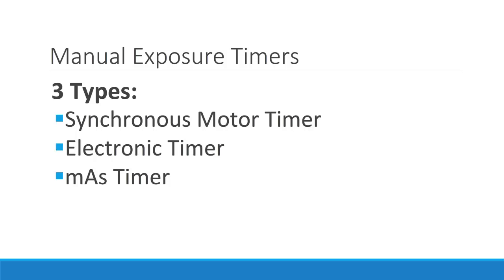All three are utilized during manually set technique exposures and do not include automatic exposure control, which we will discuss in a separate video. The three types are the synchronous motor timer, the electronic timer, and the MAS timer.